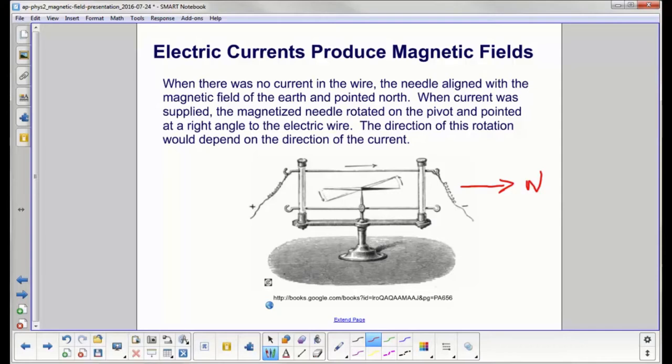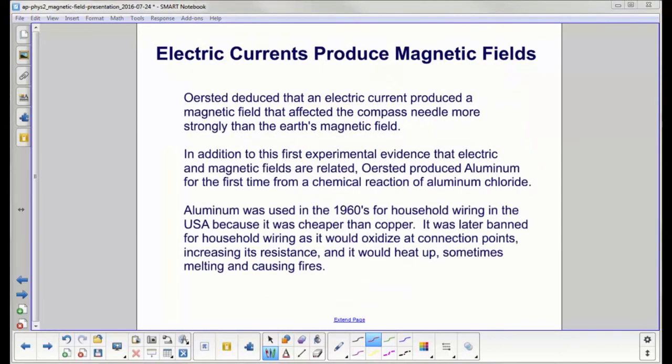The story is that Ørsted was doing a demonstration in his classroom where he had a current-carrying wire and turned the current on and off. Nearby, he had a compass for some reason, and people noticed the compass needle would move when he turned the current on and off. If that's true, that would be one heck of a class lecture. An electric current produces a magnetic field, and that magnetic field was stronger than Earth's magnetic field because it affected the compass needle more than the entire Earth.